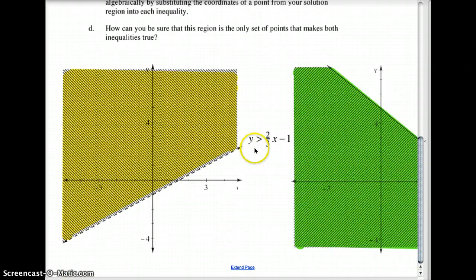Here where y is greater than two-thirds x minus 1, you can see that negative 1 is the intercept and the slope is up 2 and over 3. It's a dotted line because there's no equal sign, and y is greater, so we shade above the line.